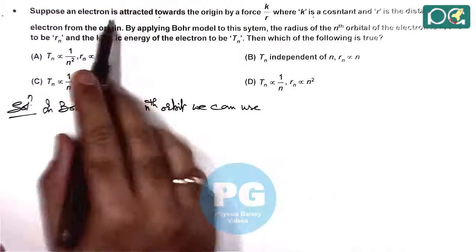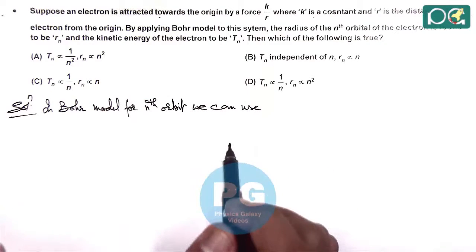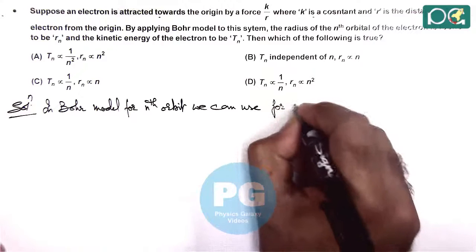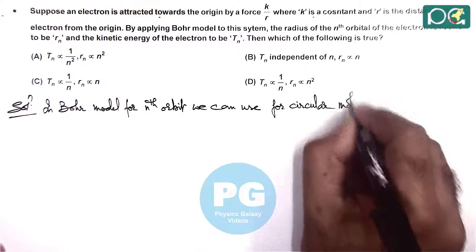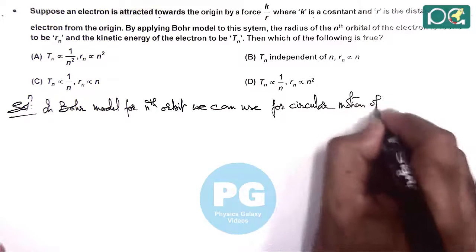As it is saying the electron is attracted by a force k/r, we can use for circular motion of the electron.